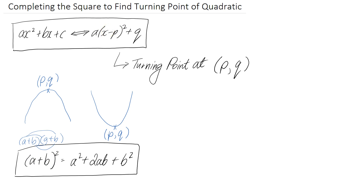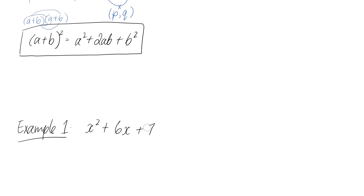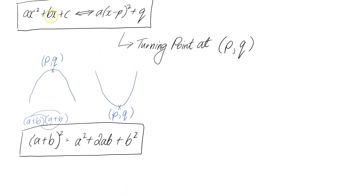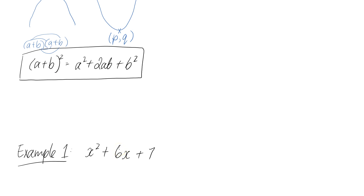I'm going to do a couple of examples of how to do this technique — starting with numbers and then doing the general case. For this first one, I'm going to find the turning point of this particular quadratic function using completing the square. My first step is to figure out what I would need to put in brackets so that the expansion ends up with x squared plus 6x. You take the b value, which is 6, and divide it by 2, giving 3. So I'm going to write x plus 3 all squared.